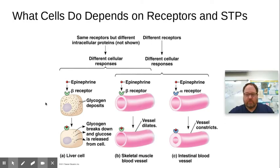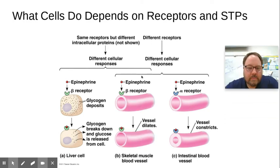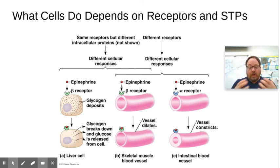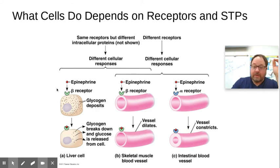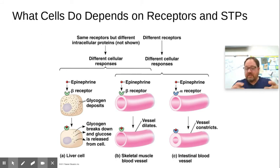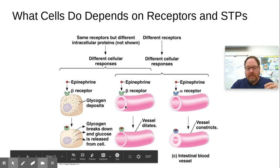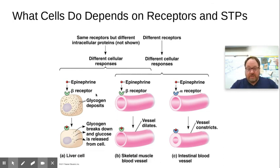An interesting point to consider is how the same hormone can have different effects. Adrenaline, for example, makes your pupils dilate, increases heart rate and metabolism, makes blood vessels in your gut narrow, but dilates blood vessels in your extremities. How does one hormone produce all these different effects? The key is that different cells have different combinations of proteins inside them. Different protein combinations lead to different signal transduction pathways and ultimately different responses — so you can have glycogen breakdown in one cell and blood vessel dilation in another, even with the same hormone and same receptor.